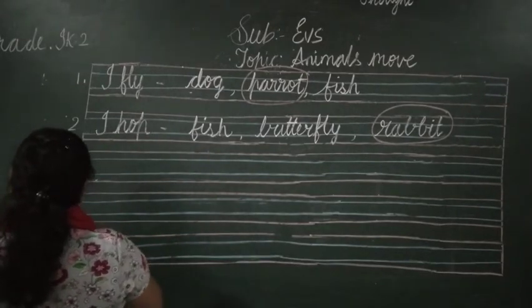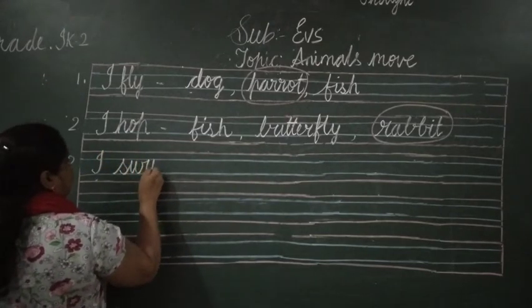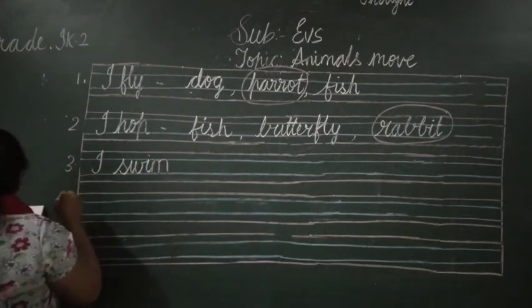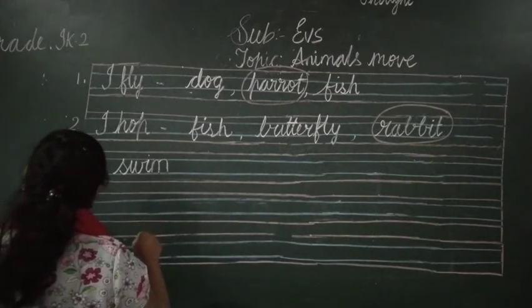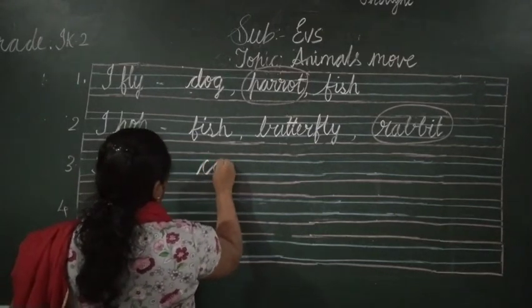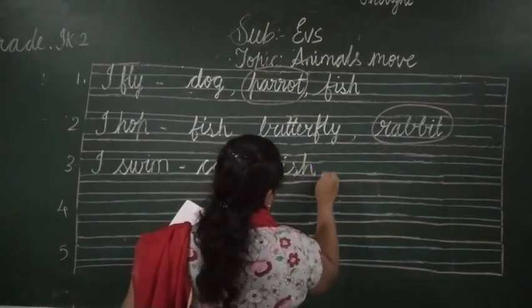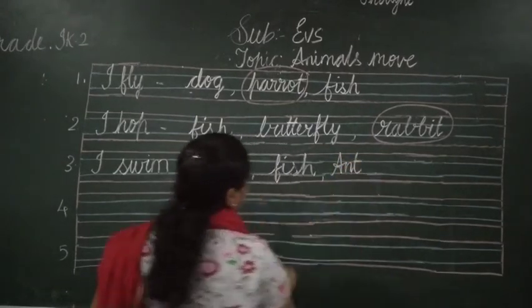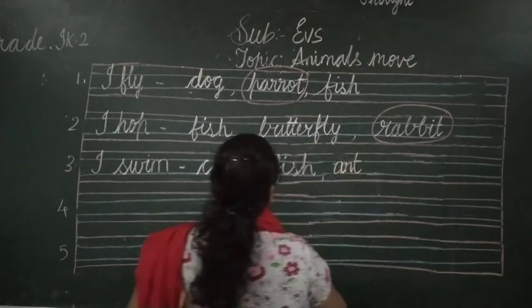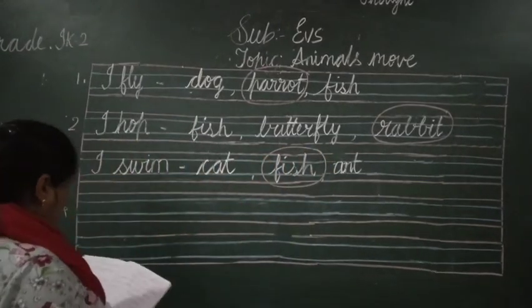Coming to the third one: 'I swim.' Which animal - a bird or a water animal - swims? The options are cat, fish, and ant. Which animal swims? You all know - fish swims in water. So circle fish. This is the movement of fish.